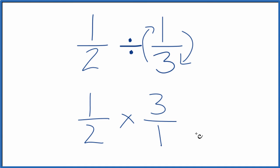Now we just say one times three, that equals three. Two times one, that equals two. And we're done. We've divided one-half by one-third.